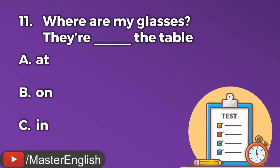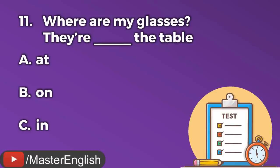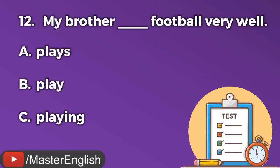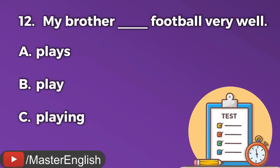Question number eleven. Where are my glasses? They're ___ the table. A: At. B: On. C: In. The correct answer is B: On. They're on the table. Question number twelve. My brother ___ football very well. A: Plays. B: Play. C: Playing. The correct answer is A: Plays. My brother plays football very well.